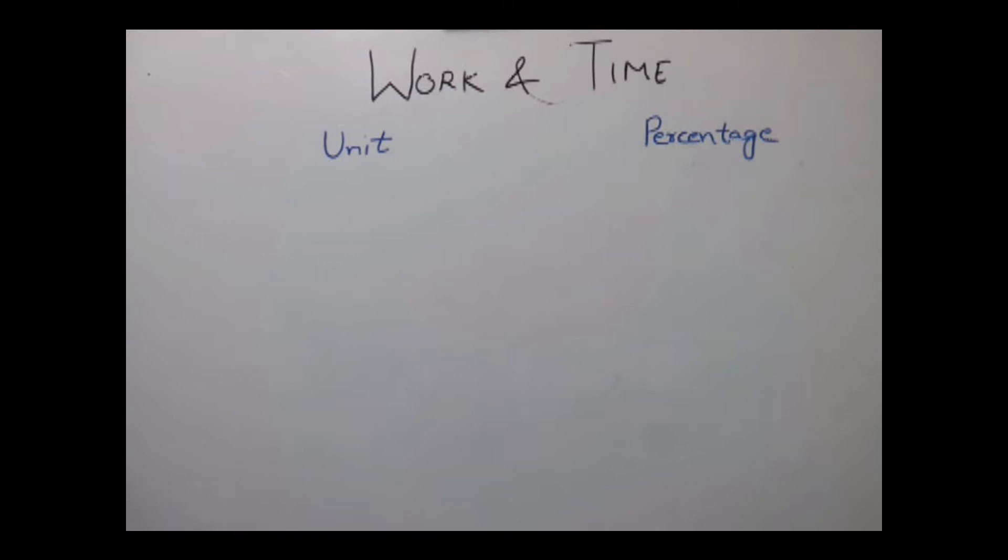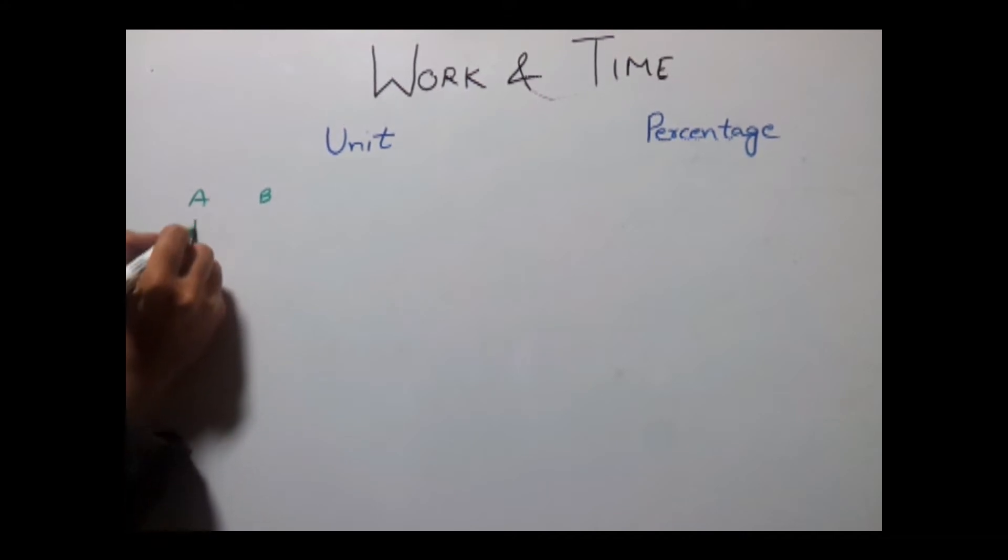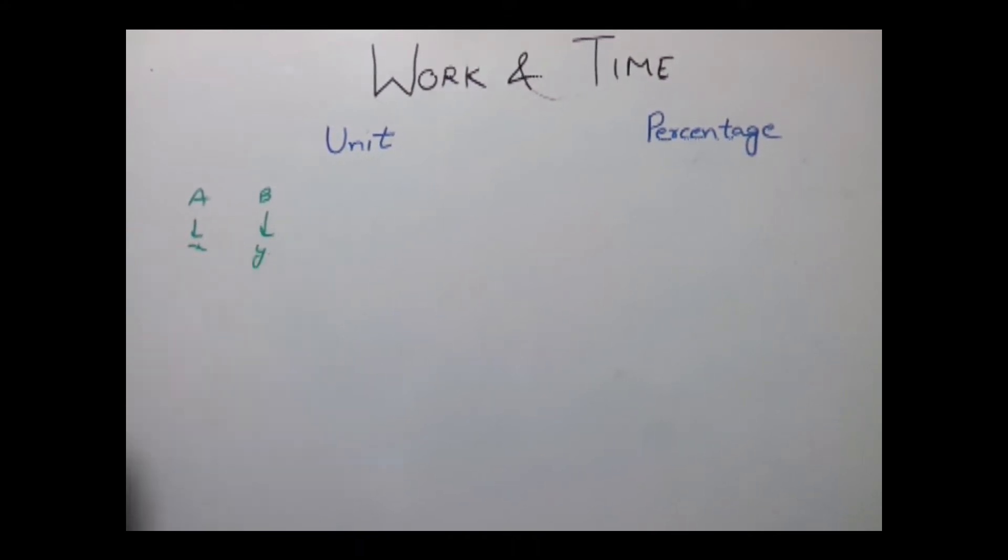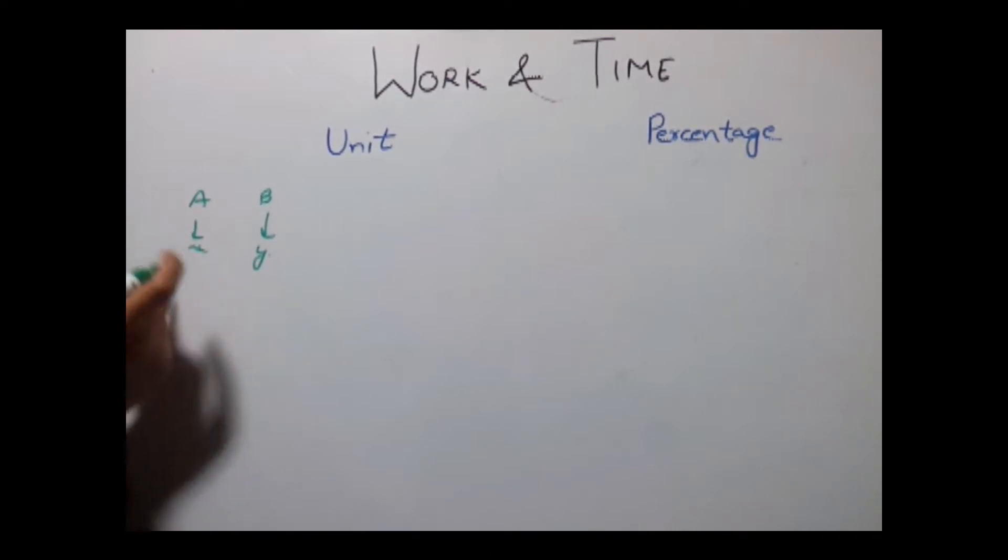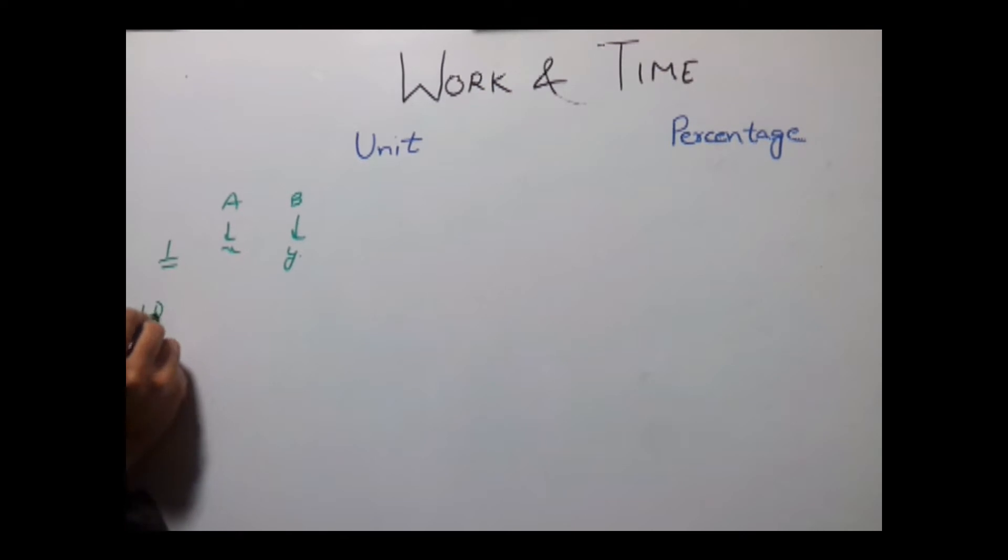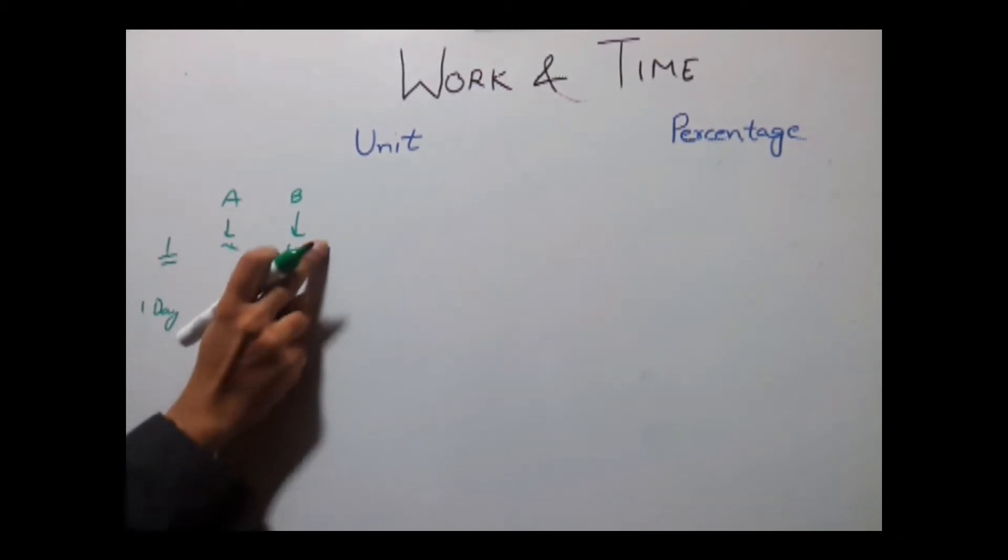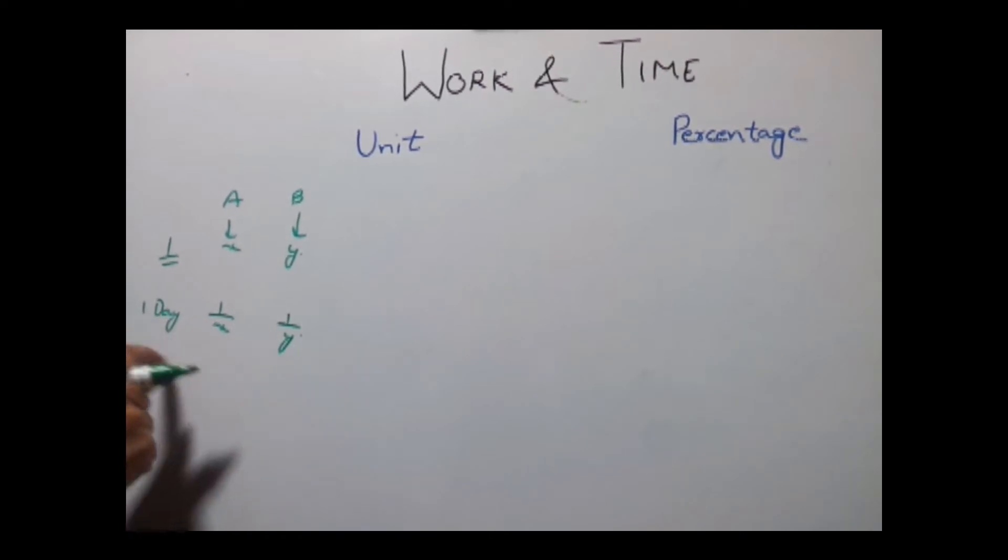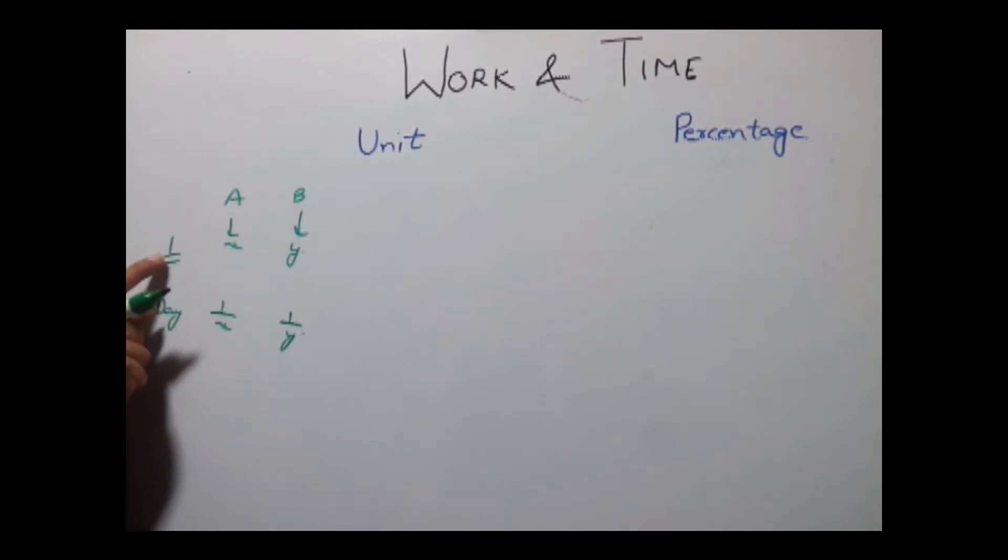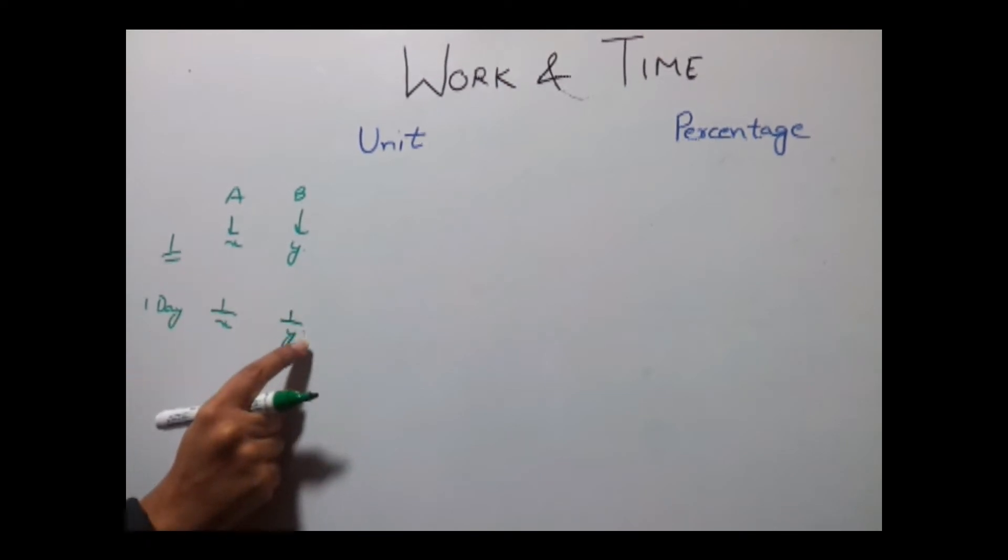The basic funda that you need to understand while solving problems related to work and time is, if there are two persons A and B, if A completes a work in X days and B completes a work in Y days and if we consider that the unit of the work is 1, then in one day A will do 1 by X of work. Similarly, in one day B will do 1 upon Y of the work.